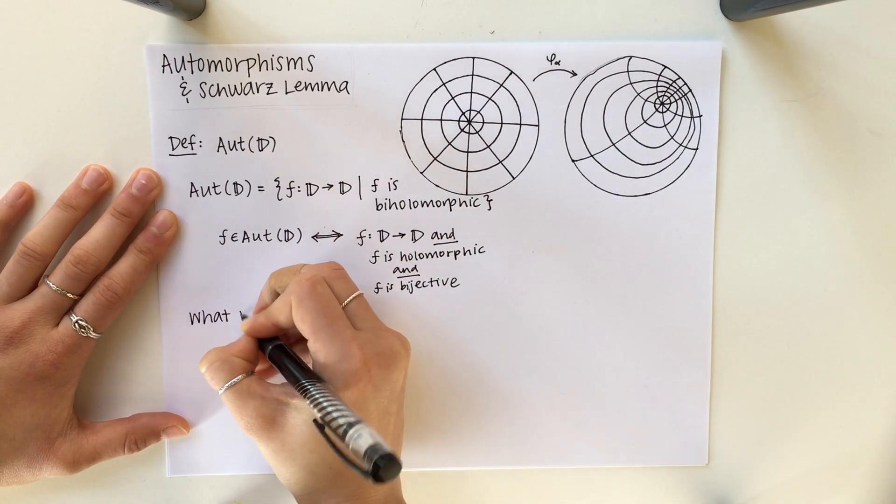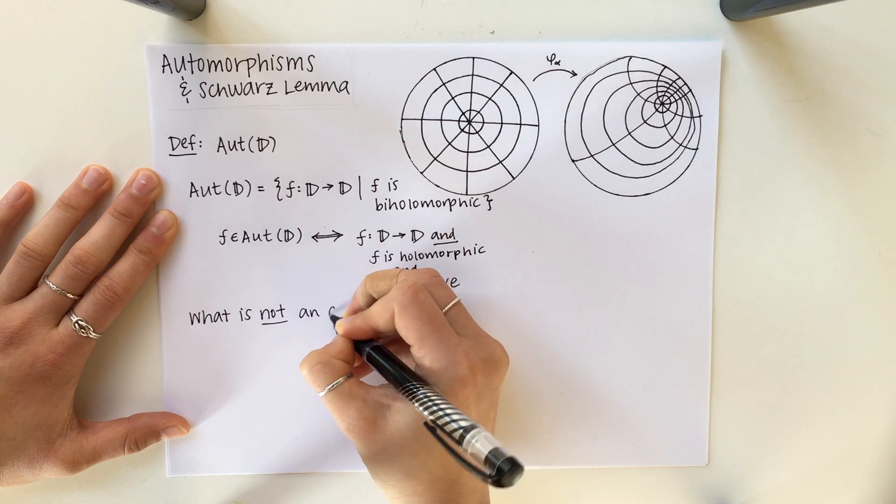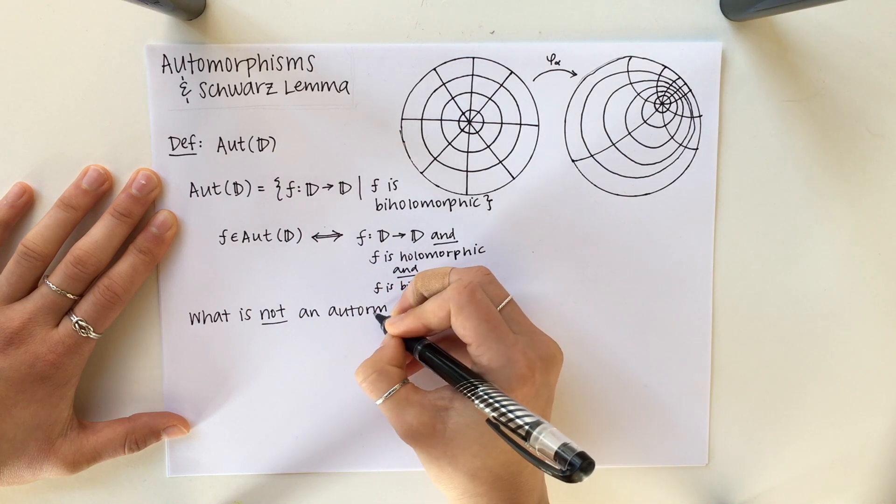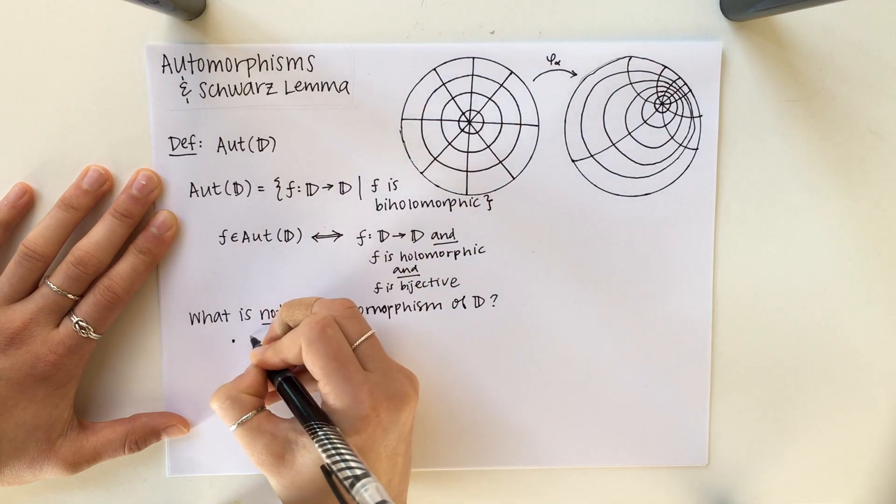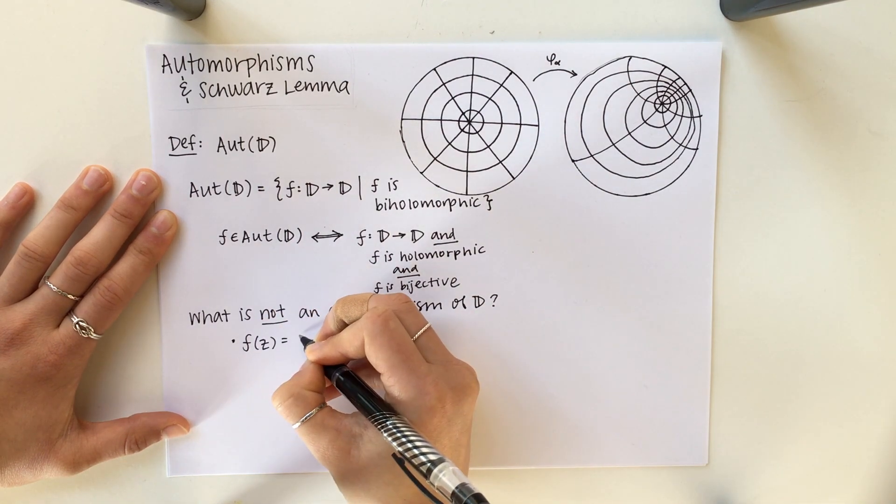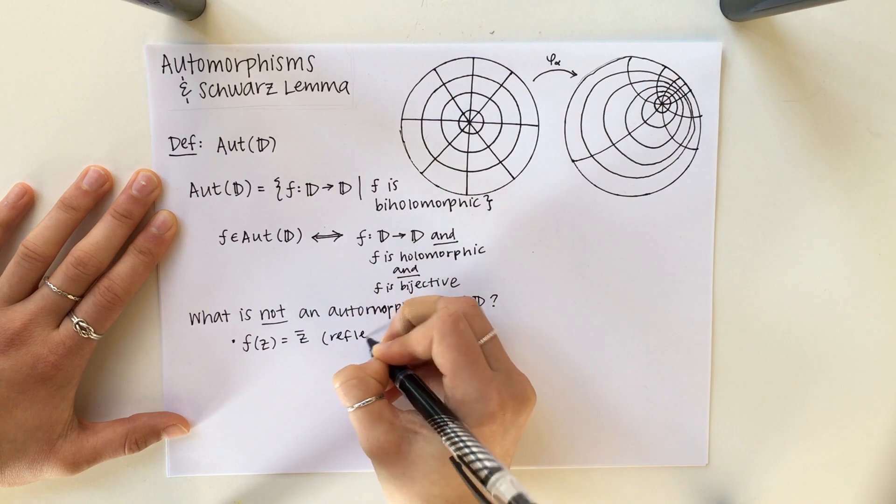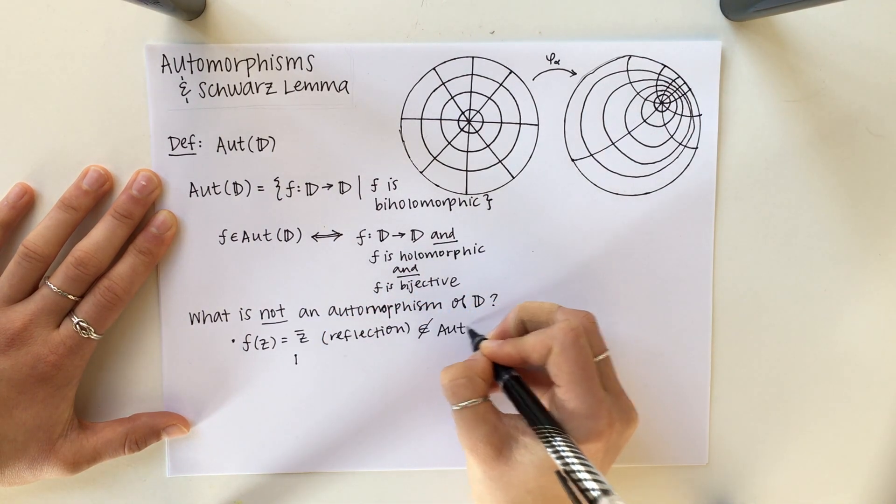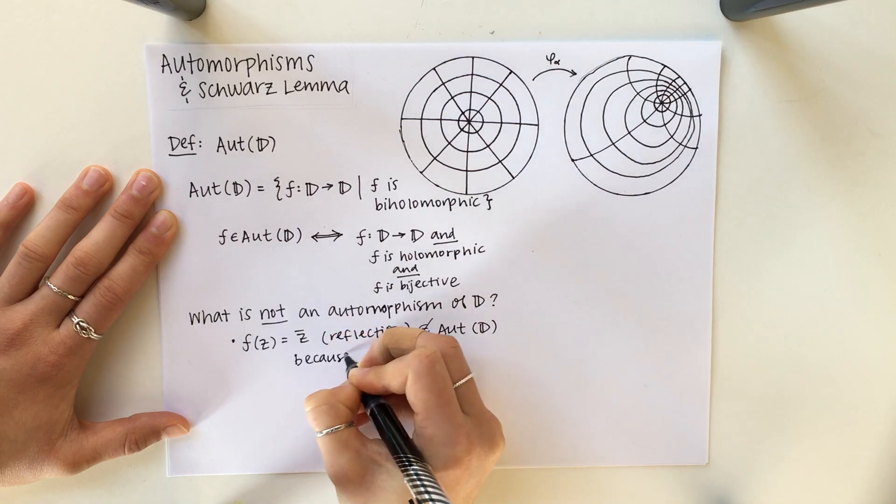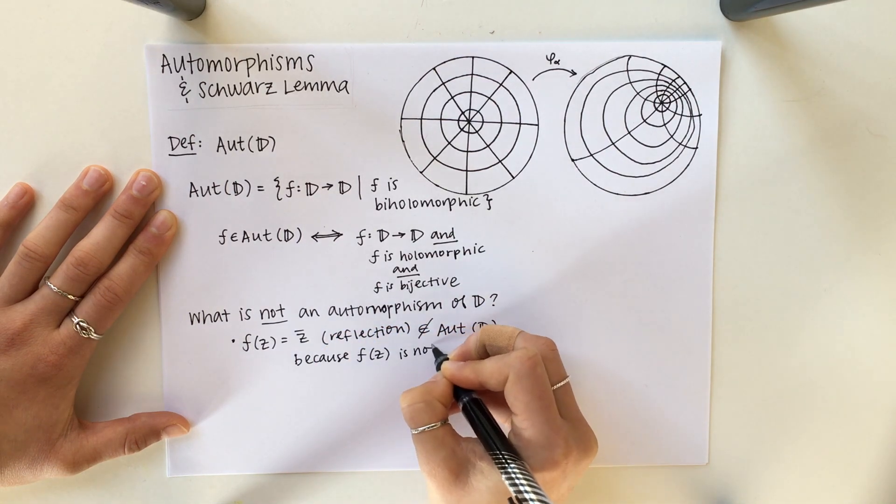To understand what an automorphism is, we'll first talk about what an automorphism is not. Here are some examples of functions that are not automorphisms of D. For example, we can start off with the reflection. Even though it does map from D to D, it's not in the automorphism of D because F is not holomorphic.